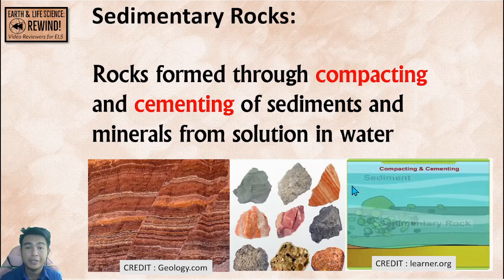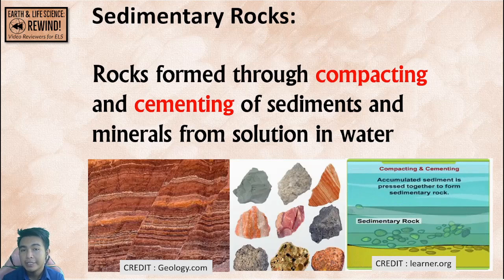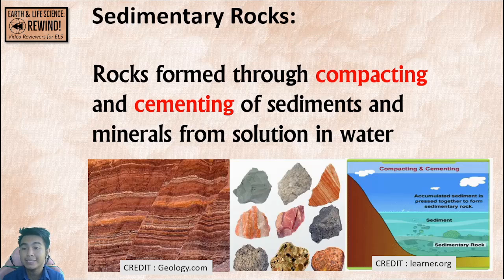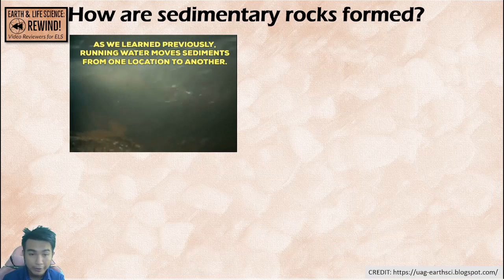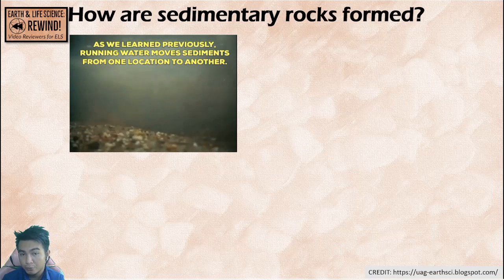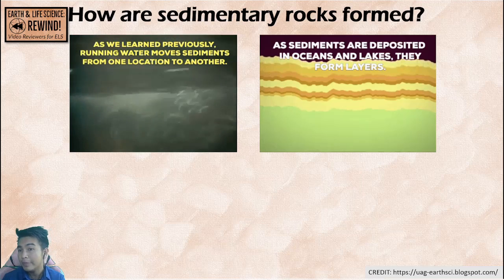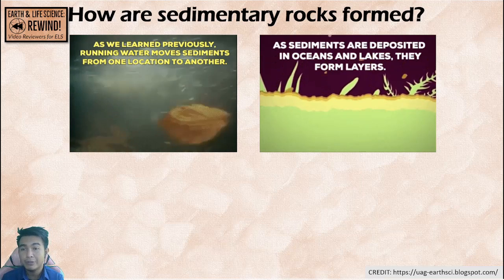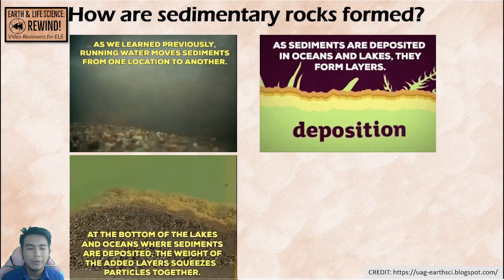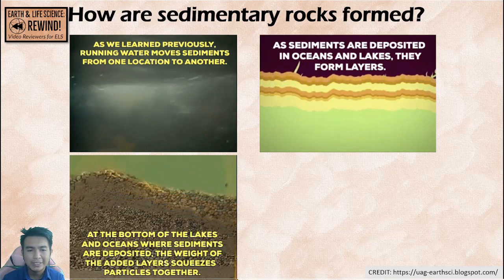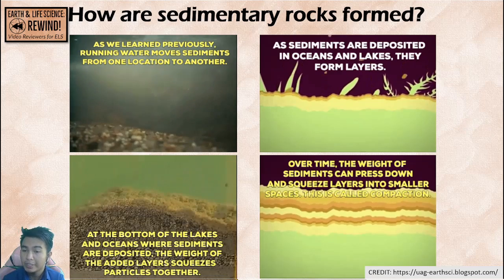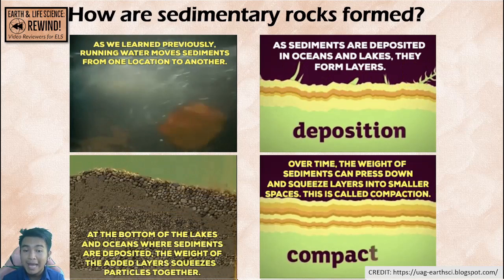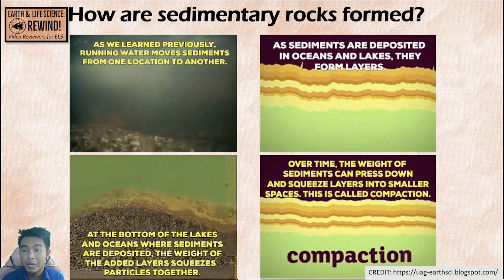Sedimentary rocks are formed through compacting and cementing. They are compacted as they settle in layers in bodies of water, formed when fragmented through weathering. They form layers as they settle to the bottoms of lakes and oceans. The deposited sediments gather weight, become heavier, and squeeze together until they become compacted and form into rocks.